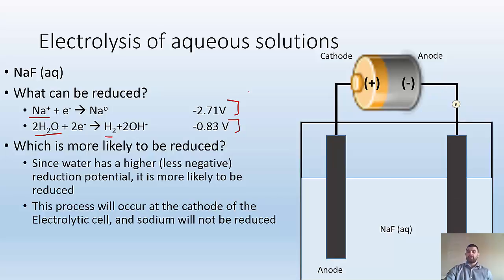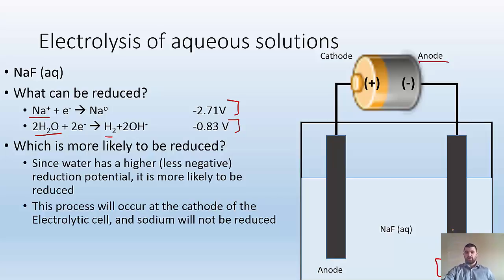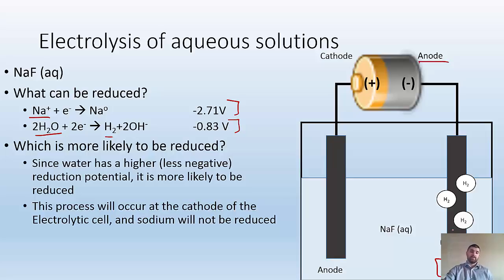The electrons come out of our power source — the anode of the power source builds up on the cathode of our electrolytic cell. It's going to interact with either the sodium or the water. Water is more likely because it has a less negative reduction potential, so we're going to get hydrogen gas there.